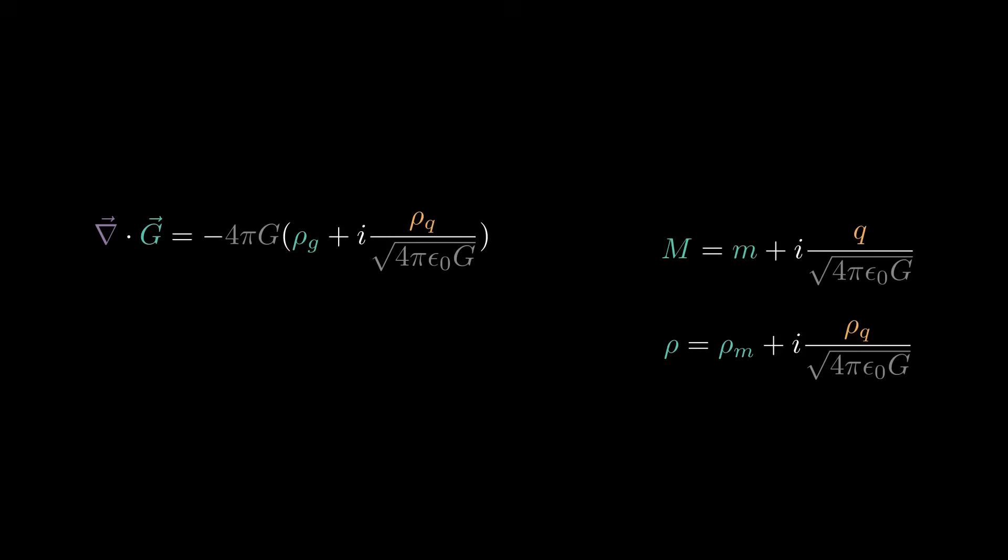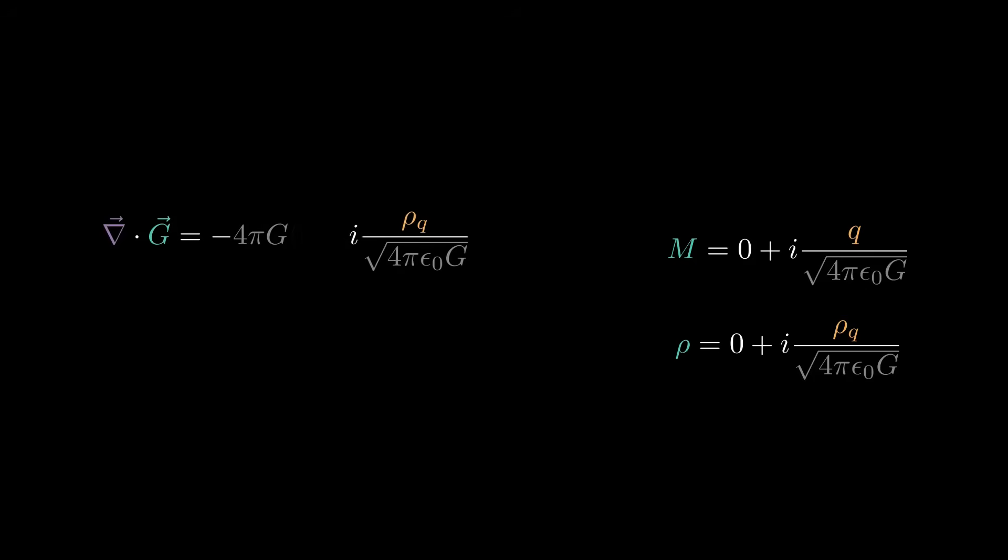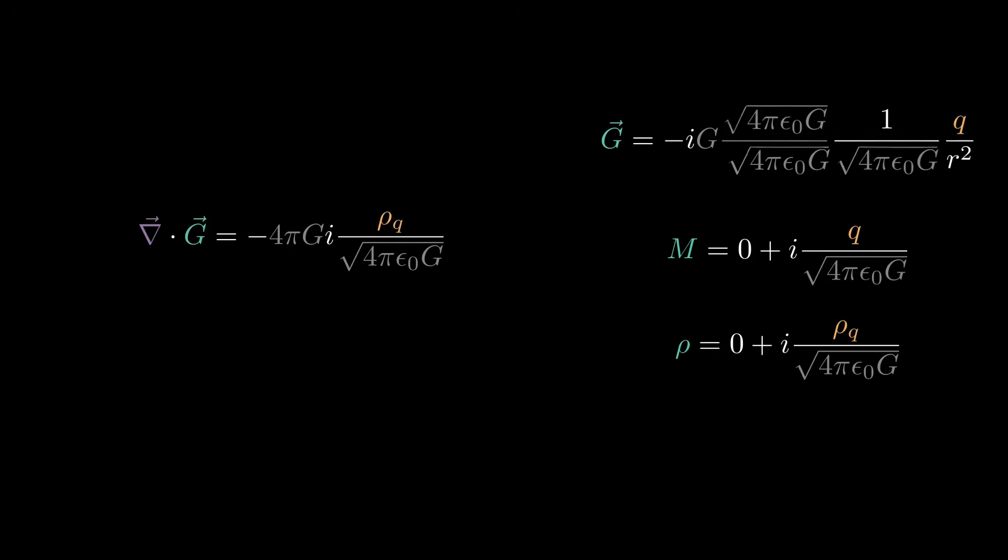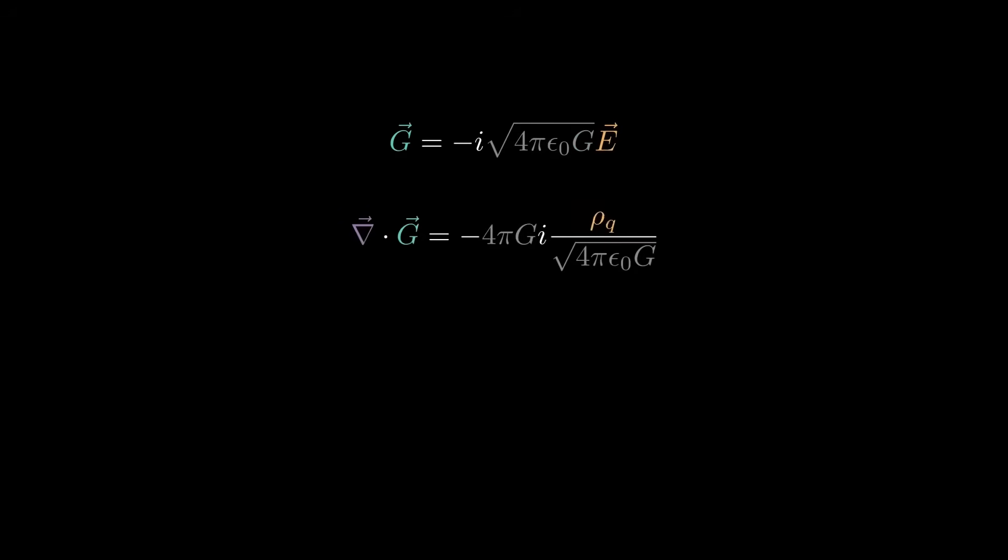Next step is to consider mass to be zero. Bring the Newtonian gravitational field and write it in terms of our new values. Multiply by one. Rearrange and cancel. Here's the definition of Coulomb's electric field. So rewrite and take its divergence. Negative i's cancel, rearrange, and cancel.